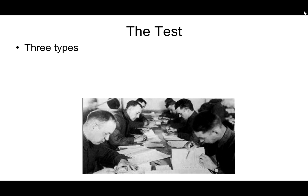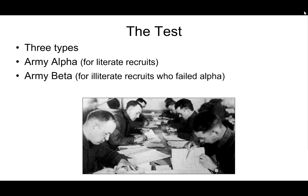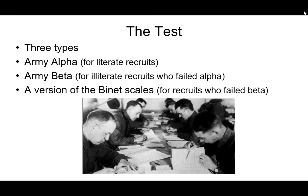There were three types of tests. There was the Army Alpha, for literate recruits who could read and write. There was the Army Beta, given to recruits who failed the Alpha and were deemed illiterate. And then there was a version of the Binet scales for recruits who failed the Beta. Men would need to be removed from their training temporarily and returned for another test. You can imagine how much the army loved this.